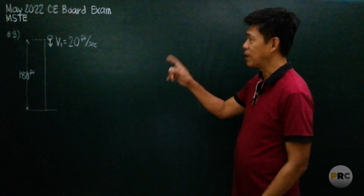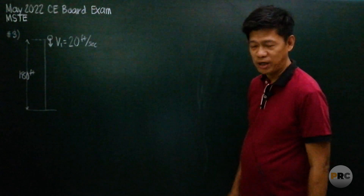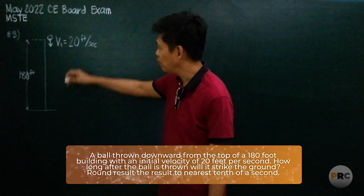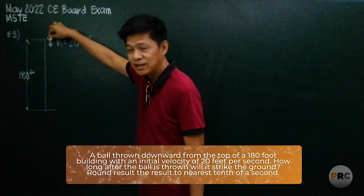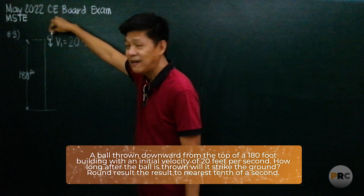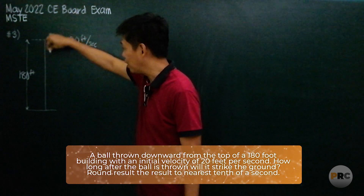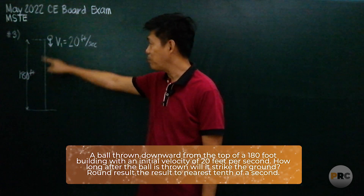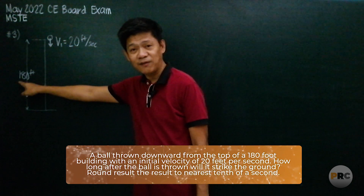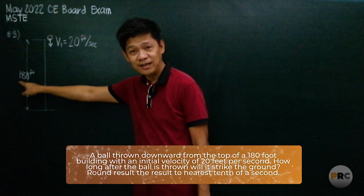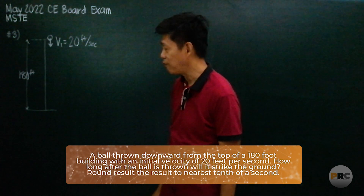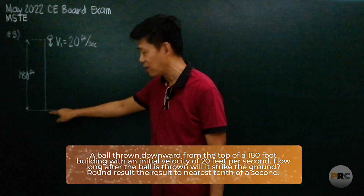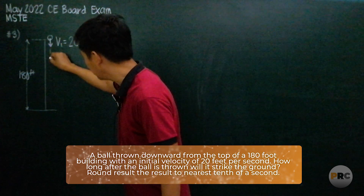Let us move to problem number three. According to problem number three, we have an object that was thrown vertically downward at 20 feet per second at the top of a building that is 180 feet high. We are asked here to find the time it requires to hit the ground.